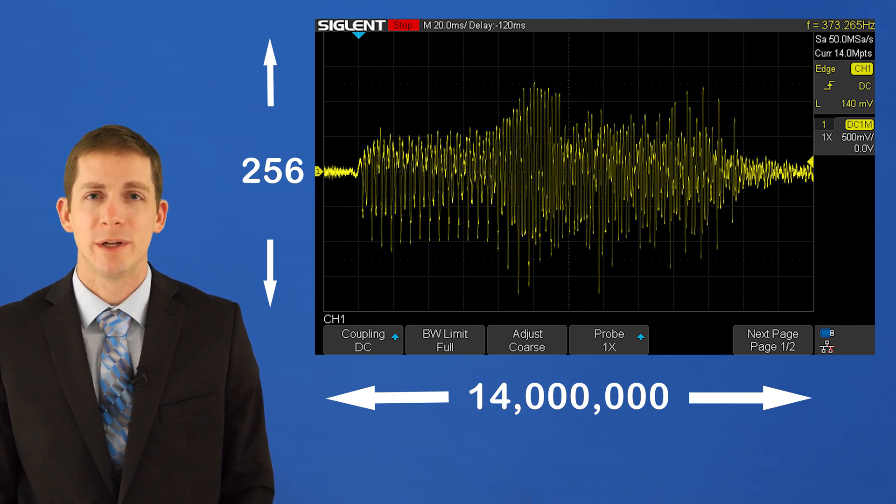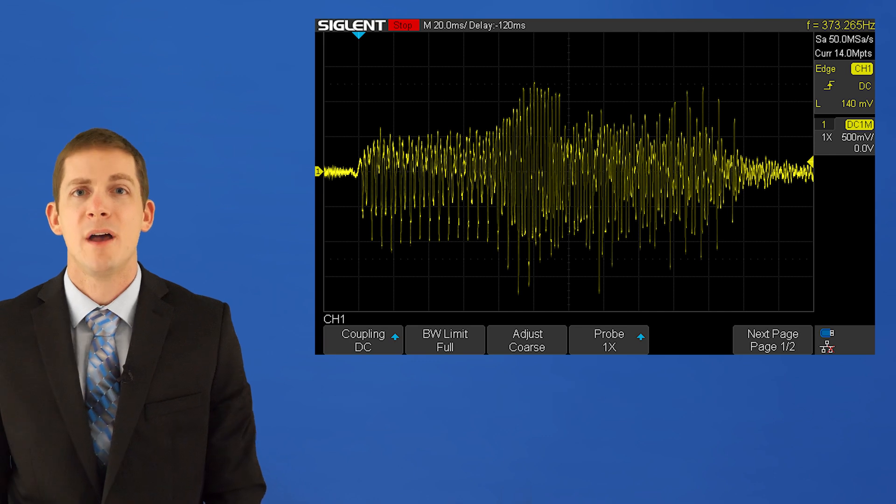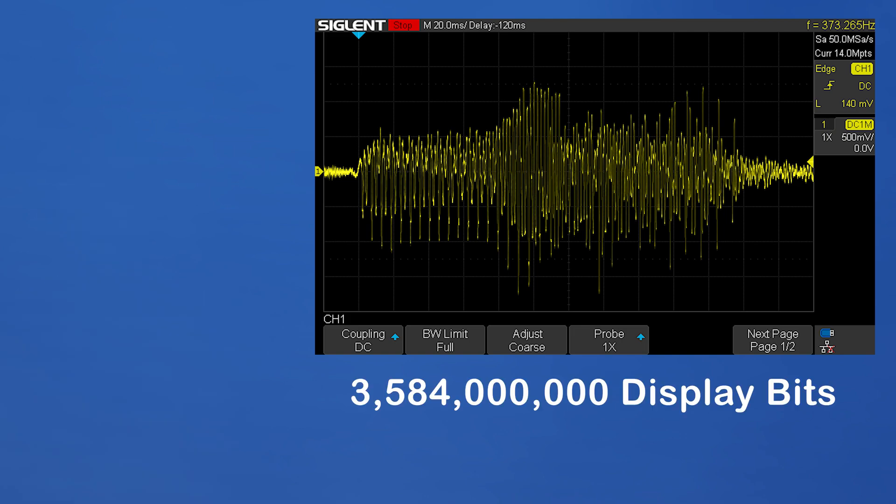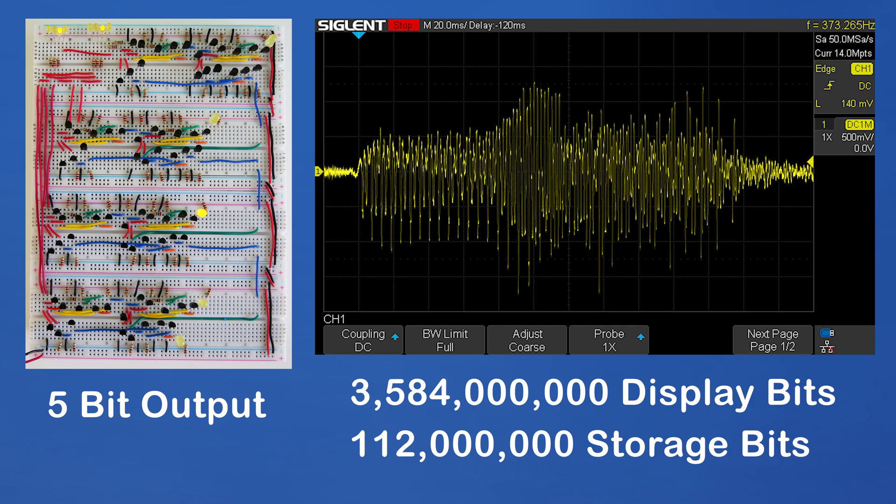And because the oscilloscope is 8 bit, it has 256 points along the y-axis. This means that the oscilloscope display of four is being represented by 3.584 billion bits compared to the calculator that I built that only has an output of 5 bits.